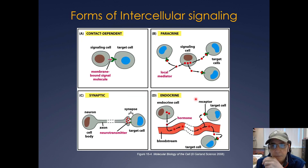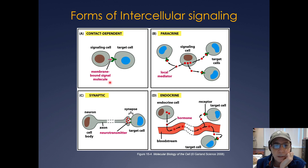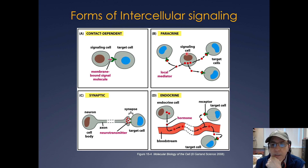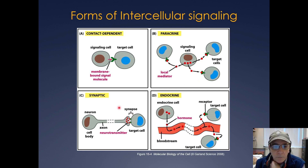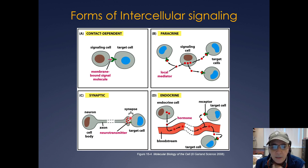Here are some forms of intercellular signaling. You can have contact-dependent signaling, where a signaling cell and a target cell are in direct contact — this often happens with an immunological synapse, when a T cell and a B cell come together. You can have paracrine signaling, where a signaling cell releases a local mediator that binds receptors on nearby target cells. Synaptic signaling involves neurotransmitter release at the synapse, which binds to a receptor on the target cell and elicits a response.